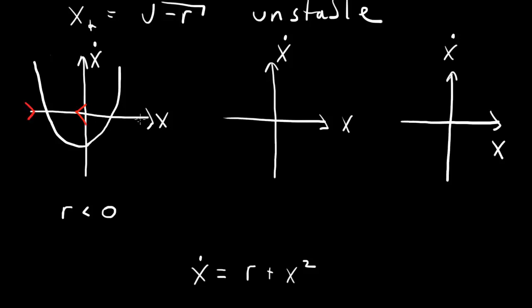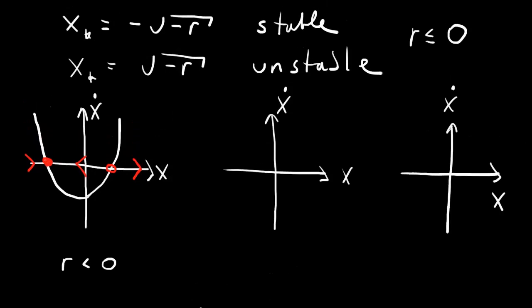Drawing the stability: the fixed point on the left — if we move away from it, we go back toward it, so this fixed point is stable. The fixed point on the right — if we move away from it, we run away, so this fixed point is unstable. This confirms our earlier finding: the negative fixed point is stable, and the positive fixed point is unstable.